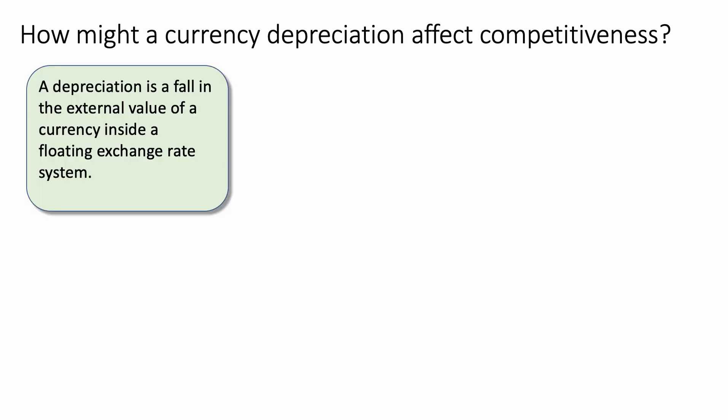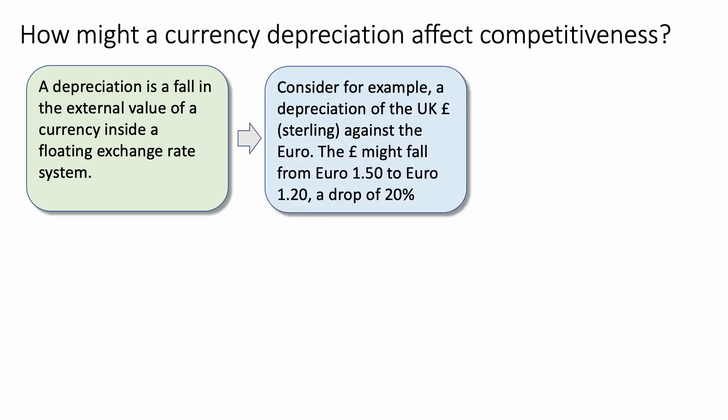Start with the definition. A depreciation is a fall in the external value of a currency inside a floating exchange rate system. Then give an example: consider a depreciation of the pound sterling against the euro. The pound could drop from buying 1 euro 50 to buying 1 euro 20 — that's a 20% fall in the exchange rate.